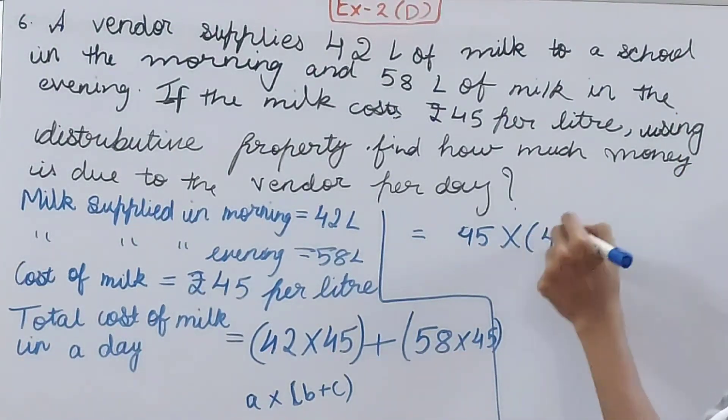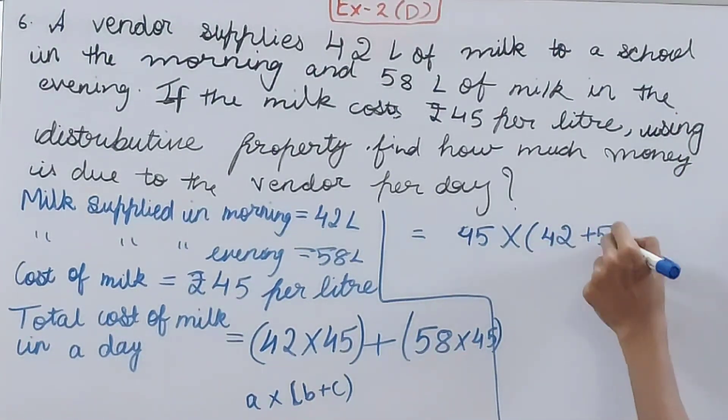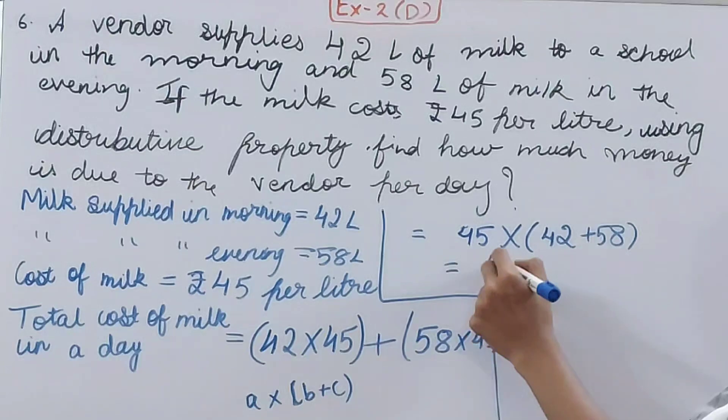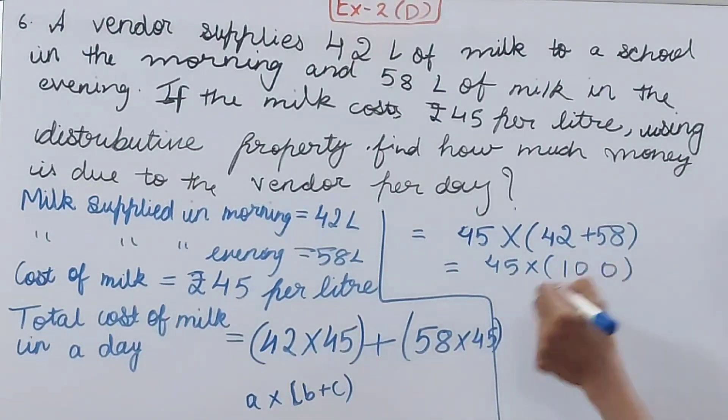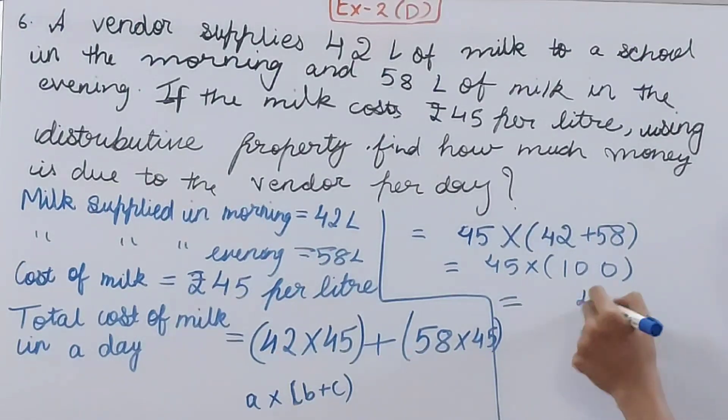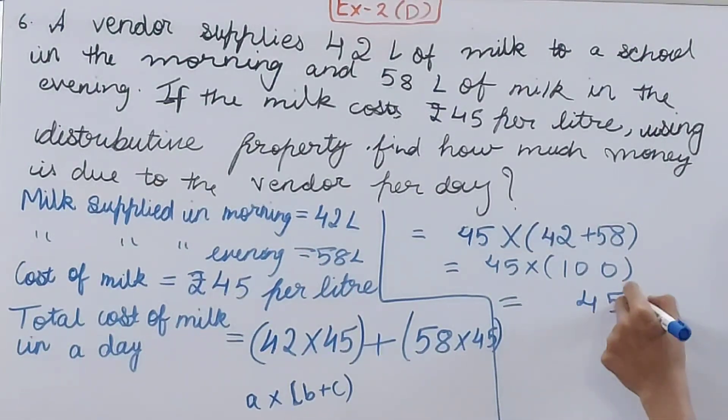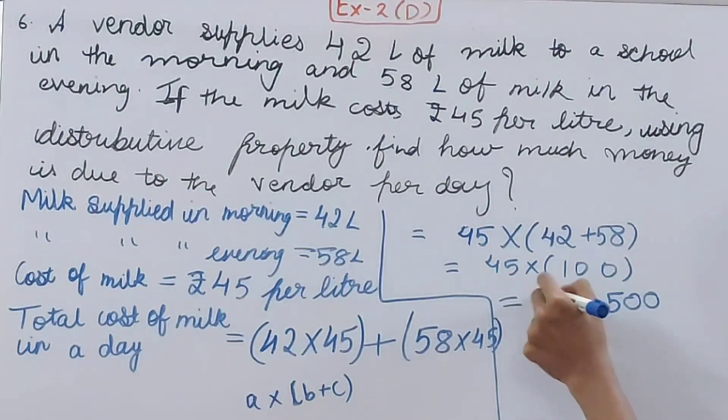45 into 42 plus 58 is 100, so 45 into 100 is 4500 rupees. That becomes the cost and that also becomes your final answer.